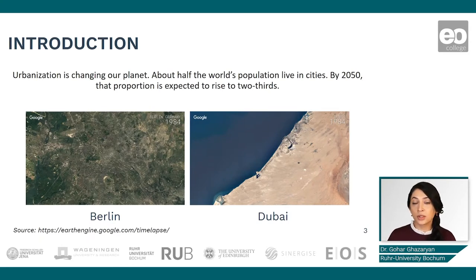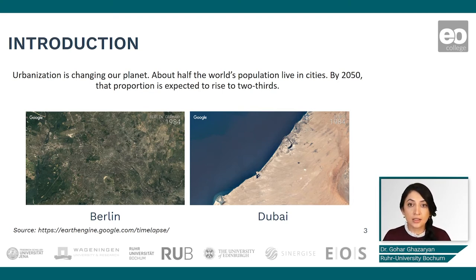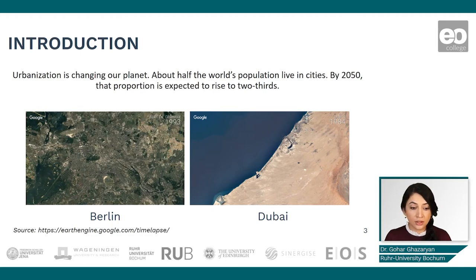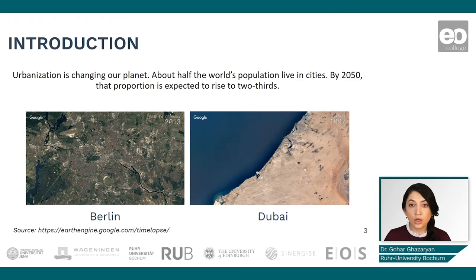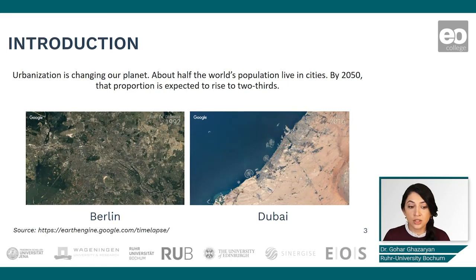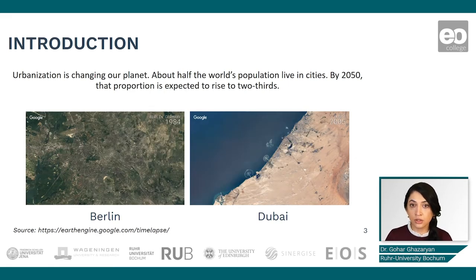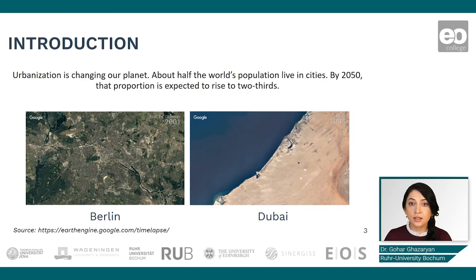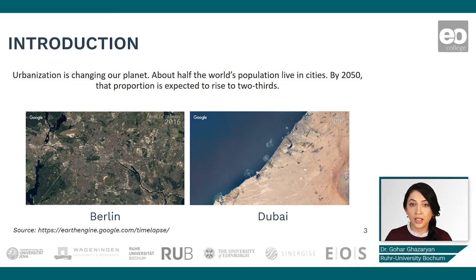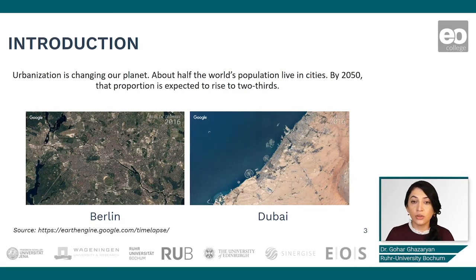In general, urbanization is changing our planet. About half of the population lives currently in cities and this number is expected to increase. Here we can already see some examples of how remote sensing data can capture the changes in urban areas. But besides this visual observation, there is a need for quantification and more information regarding not only the changes but also the implications and impacts of these changes.